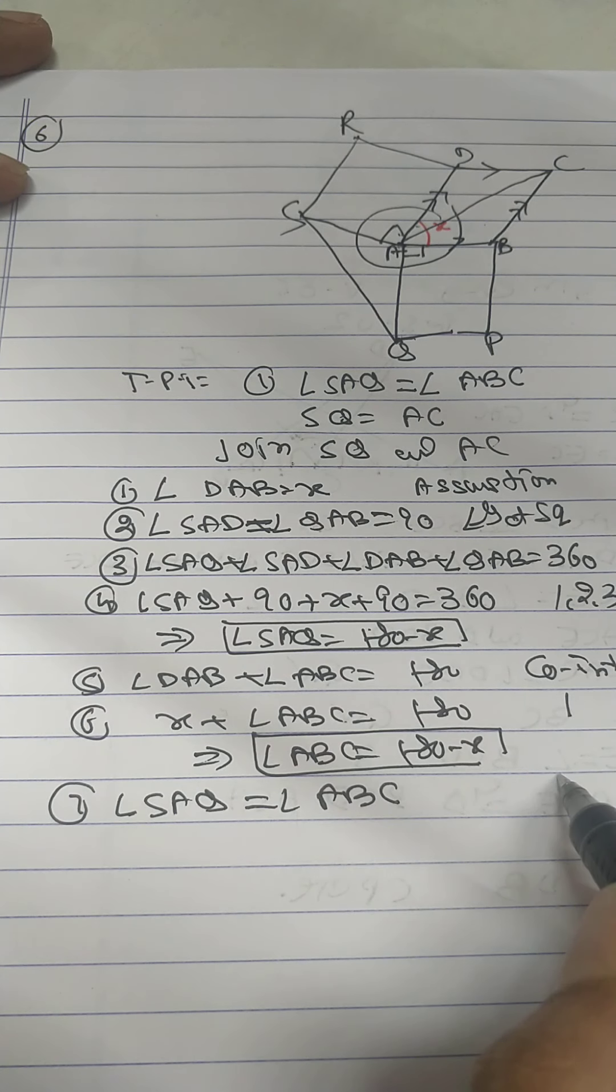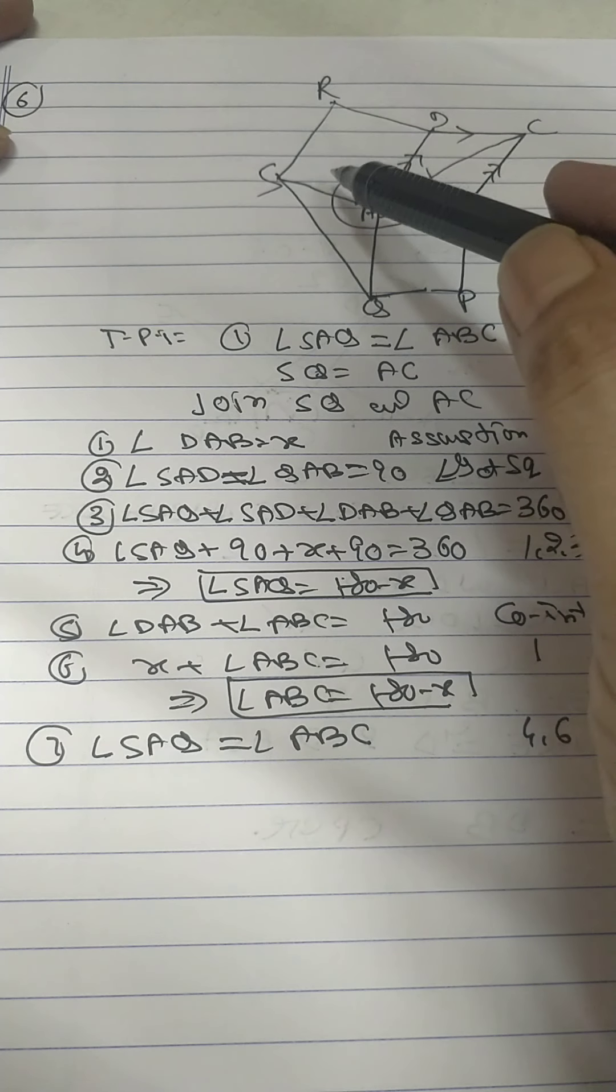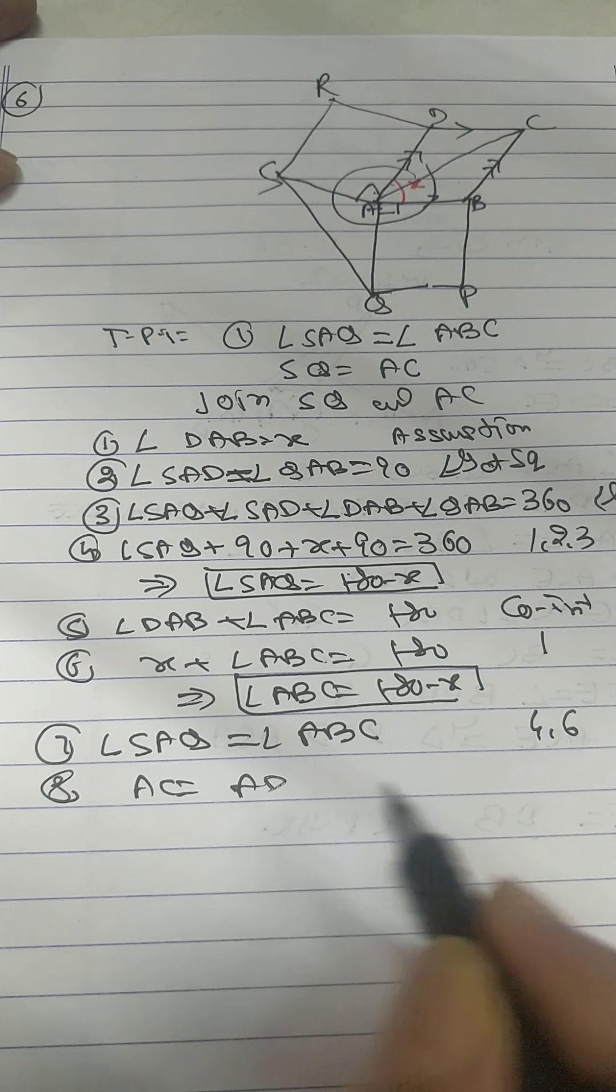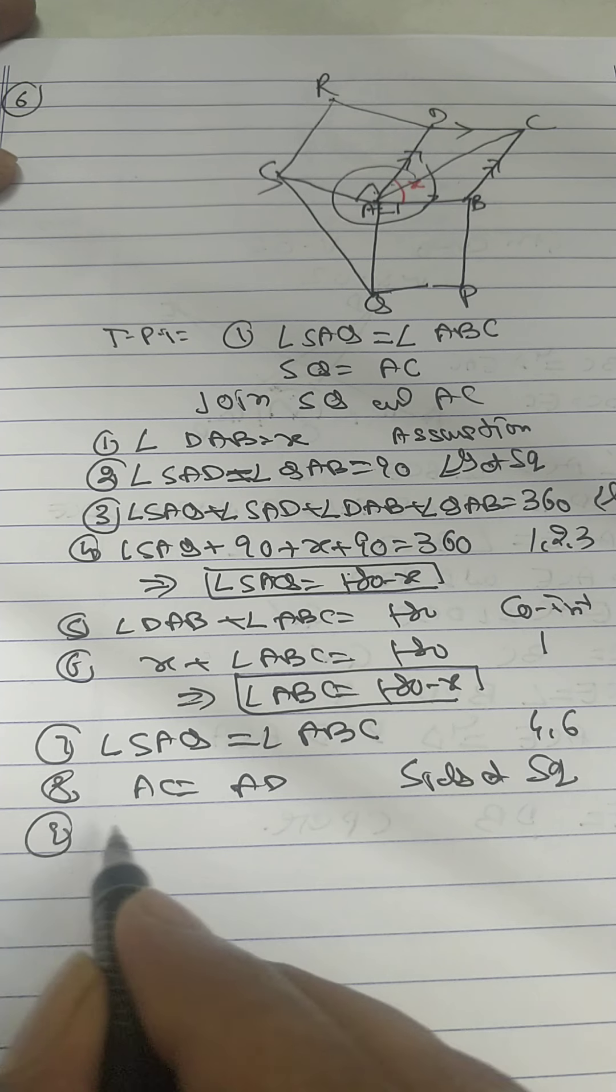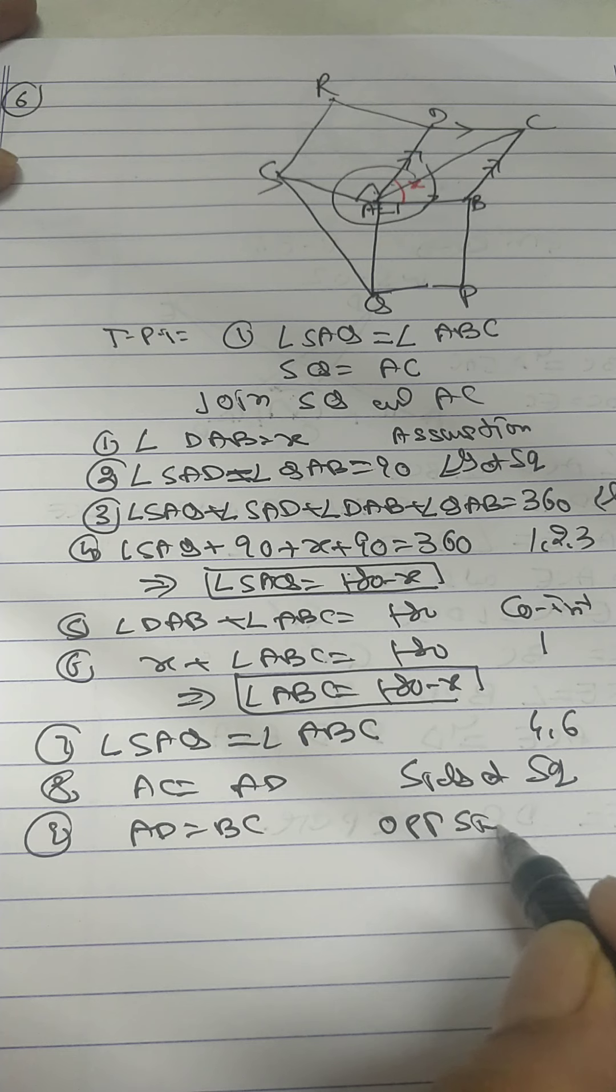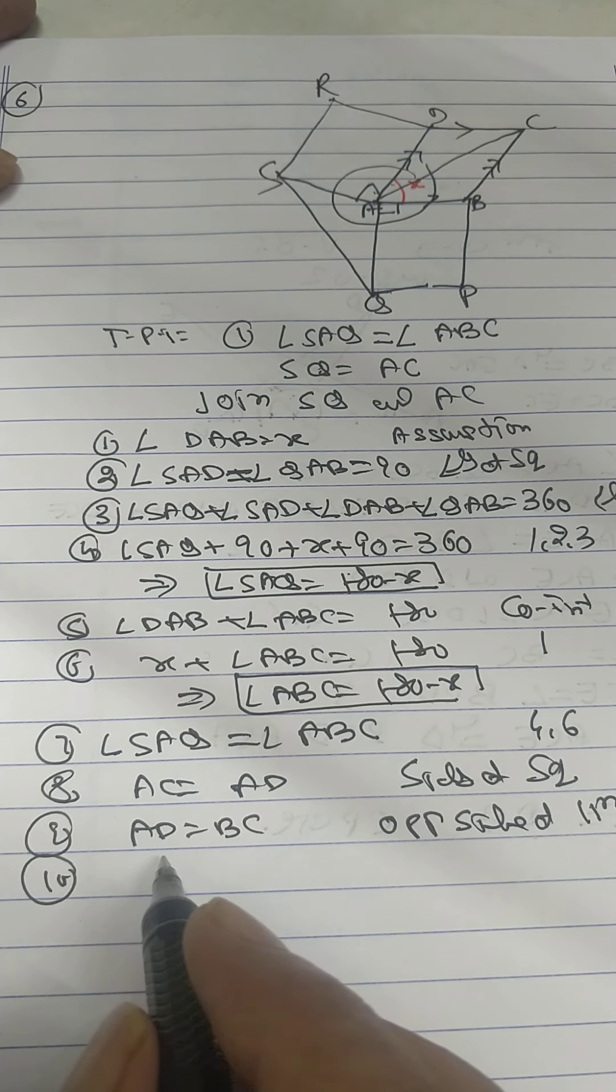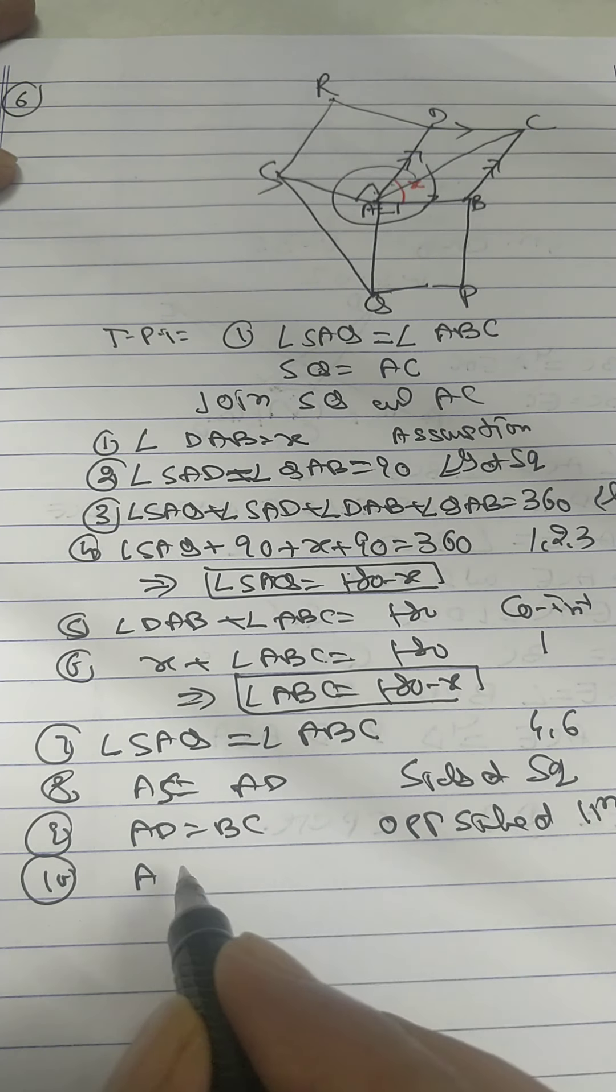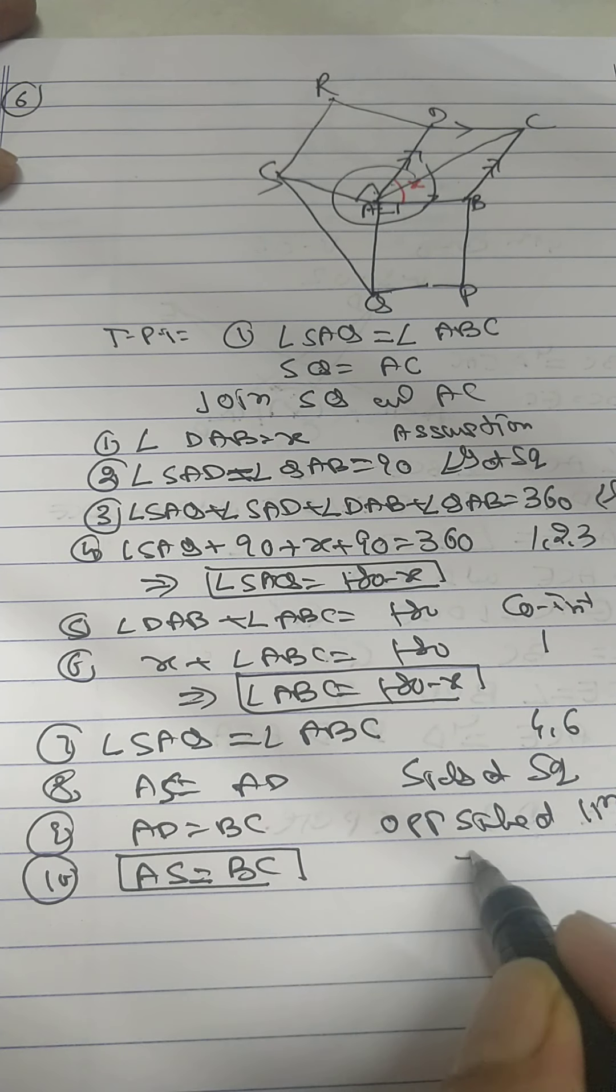Now AC equal AD, AQ equal AB, sides of square. AD equal BC, opposite side of parallelogram, that give me so AS equal BC from statement 8 and 9.